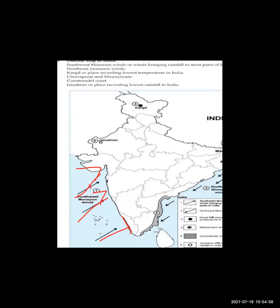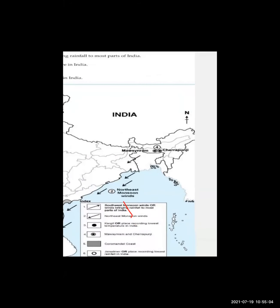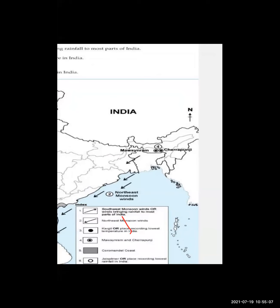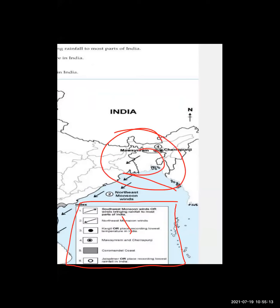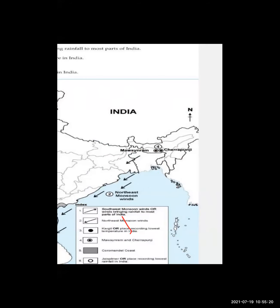After marking the first item, always draw a proper index. The index carries two marks - if you forget to draw it, you lose two marks. So after making the index, for the first question - southwest monsoon wind - mark the wind arrow properly and then write the question in the index.